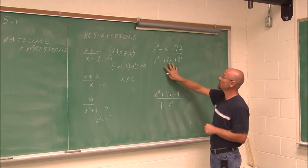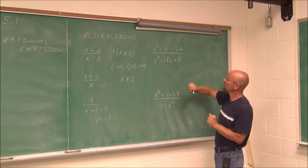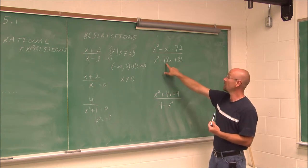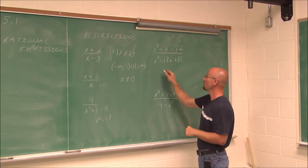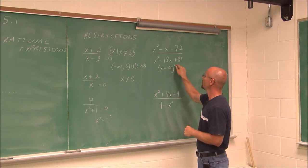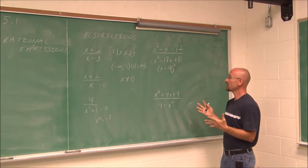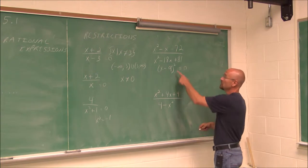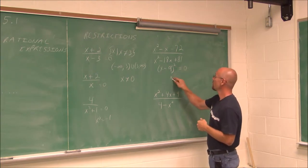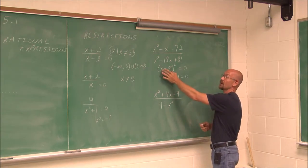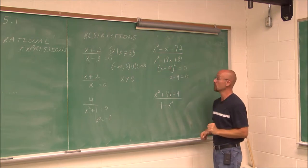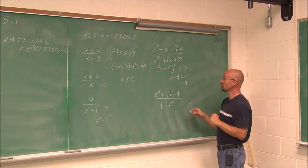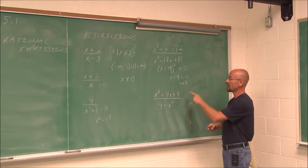For this example, the first thing we're going to do is factor the denominator. We can recognize it as a perfect square trinomial: 81 is a perfect square of 9, and the middle value is negative 18, which is twice 9, so it factors to x minus 9 squared. Now that it's factored, we set it equal to 0. Adding 9 to both sides gives x equals 9, so our domain restriction is x cannot equal 9.